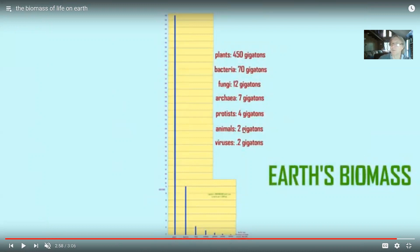If animals are about two gigatons, archaea would be seven, and eubacteria would be 70. So certainly there is an incredible amount of bacteria on the planet.